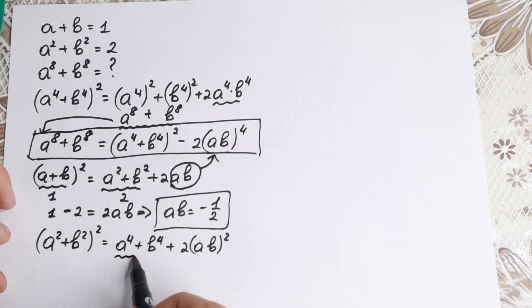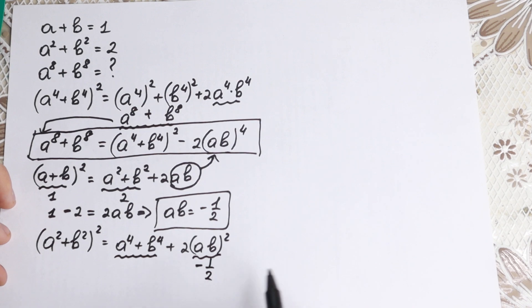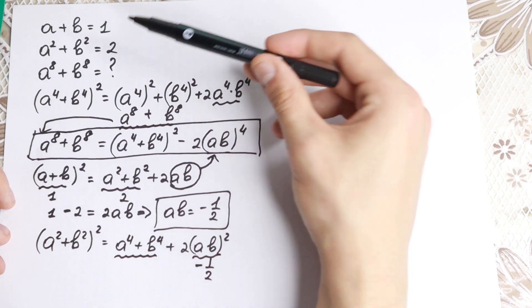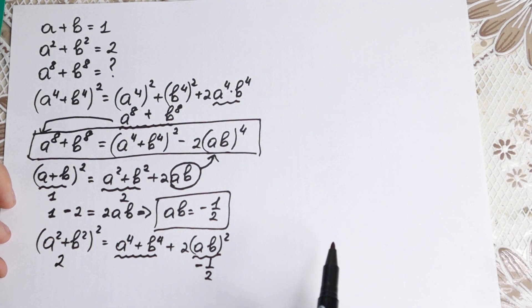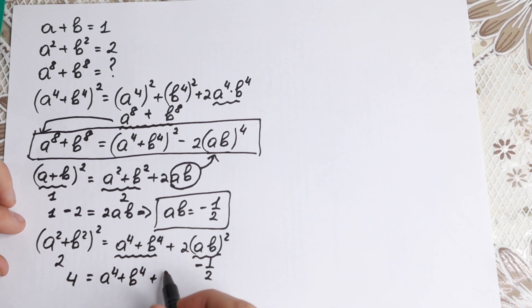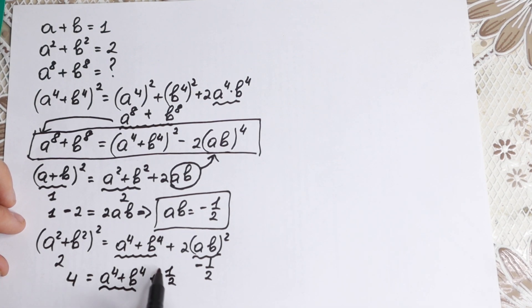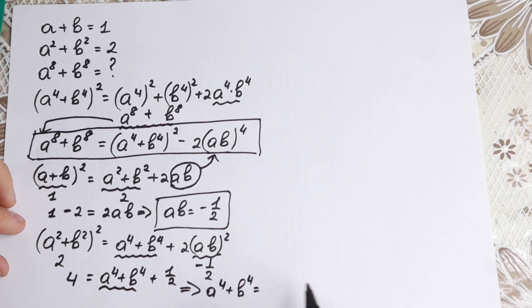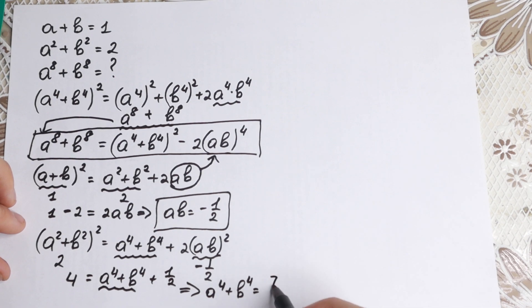We have ab equal to minus one half, and the sum of squares equal to 2. So a squared plus b squared equals 2. We get 2 squared equals 4, equal to a to the fourth plus b to the fourth, plus 2 times ab squared, which is 2 times one fourth, equal to one half. Bringing one half to the left: 4 minus one half gives us a to the fourth plus b to the fourth equal to 7 over 2.